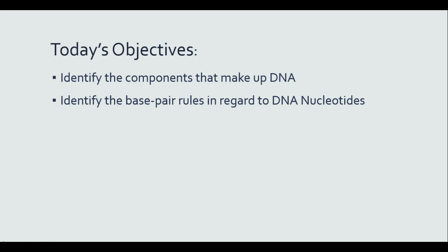Today's objectives were to identify the components that make up DNA, and we took a look at the nucleotides and how they consist of one of the nitrogen bases, deoxyribose which is the sugar, and 3 phosphates. We went over the base pair rules — just remember that A's complement T's and C's complement G's. If you have any questions, please bring them to the next class.